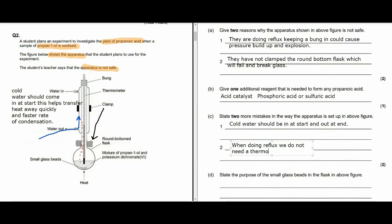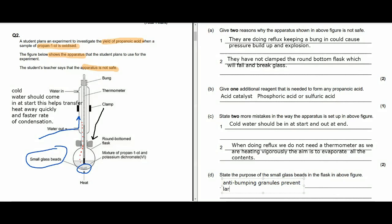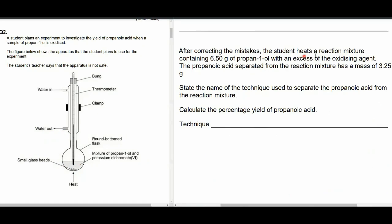Okay, and the second mistake when doing reflux, we don't need the thermometer. Okay, you need a thermometer for fractional distillation where you're holding something at a particular temperature just below the boiling point of something else or exactly on the boiling point. You don't need a thermometer for reflux where you're just aiming to vigorously heat the contents. You just want to evaporate all the contents and you're not interested in holding it at any particular temperature. State the purpose of the small glass beads. Well, the small glass beads at the bottom there, they are anti-bumping granules. And they prevent bumping, which is the formation of large bubbles that are going to rattle around your round-bottom flask and maybe cause some issues and some danger issues and safety issues as well as rattling around the equipment. They break the big gas bubbles into small bubbles and those are anti-bumping granules.